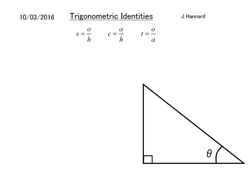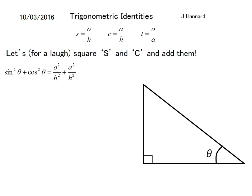Here we go, SOHCAHTOA, there's a right angle triangle. But for a laugh this time square s and c and add them together. Obviously there's a reason towards it. Sin squared add cos squared equals o squared over h squared added to a squared over h squared.